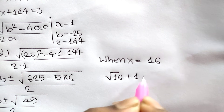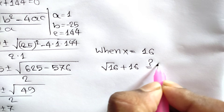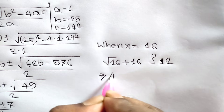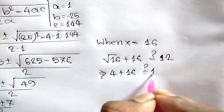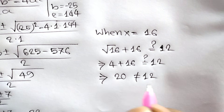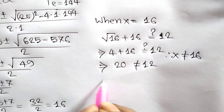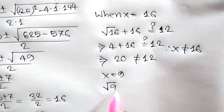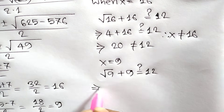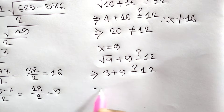Let's verify. When x is equal to 16, square root of 16 plus 16 — is it equal to 12? We know that square root of 16 is 4, so 4 plus 16 equals 20, which is not equal to 12. So x is not equal to 16.